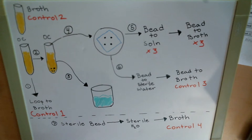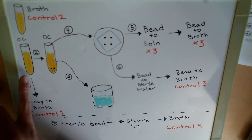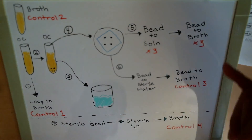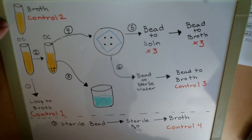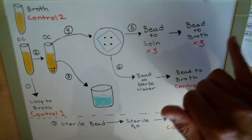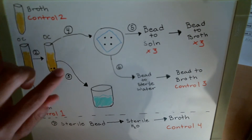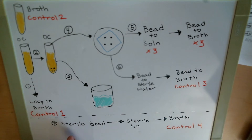So we have four controls — what do they all mean? We want to make sure we're practicing proper aseptic transfer, and also check for contamination. Control 1 confirms there's actually bacteria present — if there's no bacterial growth here, there's nothing to disinfect. Control 2 makes sure the broths are not contaminated with another kind of bacteria. Control 3 ensures microbes actually collected onto the beads themselves — that they remained on the beads long enough for transfer. Control 4 makes sure we actually have sterile beads to begin with.